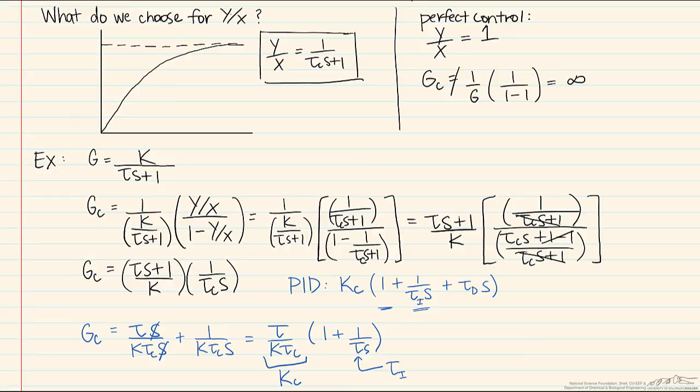we've talked about K and tau, the two constants from the G, those will be found by understanding the process, but tau c is a value that is often dependent on that G transfer function, the sensor, transmitter, and valve process combination. There are various correlations that exist, and they are available in various textbooks and in the literature.